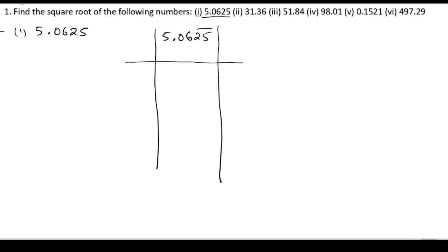Now we will put the bar for every two digits. Since 5 is a single digit, we take it with a 0 and put the bar. Now we know the squares: 1 squared is 1, 2 squared is 4, 3 squared is 9. So the nearest number to 5 in this list is 4. So 2 squared is 4.